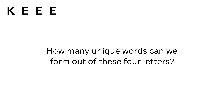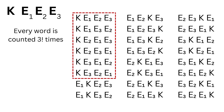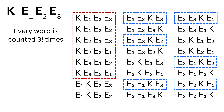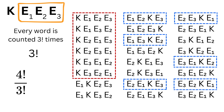Similarly, consider a word K with 3 E's. How many unique words can we form from these 4 letters? There are 24 possible words if we consider all E's to be different. But groups of 3 factorial or 6 words collapse into the same word when labels are removed. This overcounting happens because there are 3 factorial ways to arrange the 3 identical E's. So every unique word is counted 3 factorial times, and the correct answer is 4 factorial divided by 3 factorial, giving only 4 unique words.